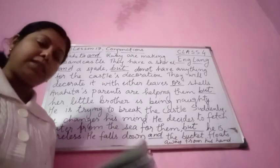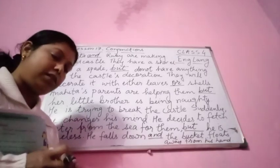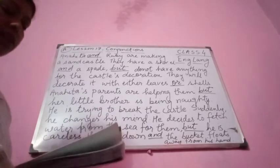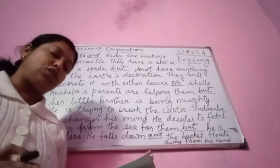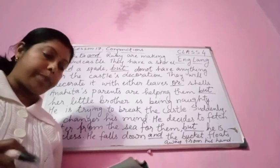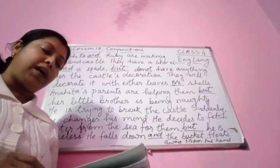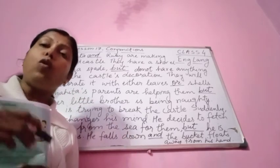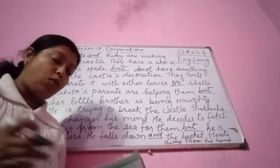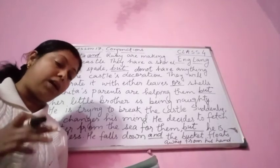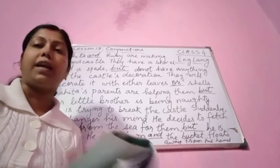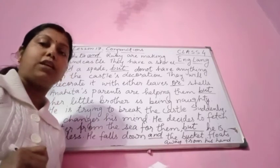Now we are going to do Exercise B: fill in the blanks with 'so', 'because', 'as', or 'since'. Gaurav was very hungry so he ate all the cake - the reason Gaurav ate all the cake was that he was hungry. Where there is a reason, we use these conjunctions. Myra did not go out because she was lazy - why did she not go out? Because she was lazy.